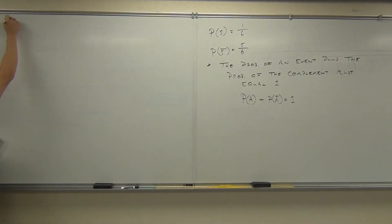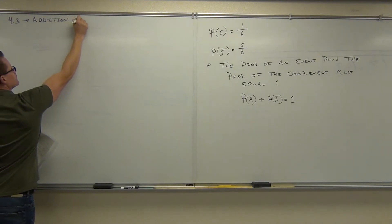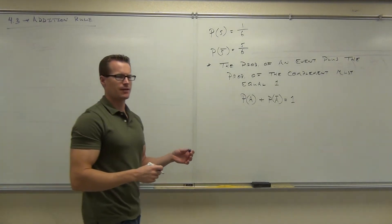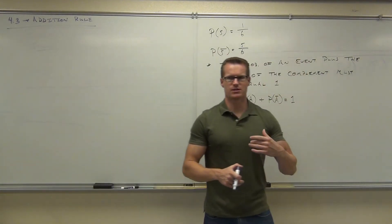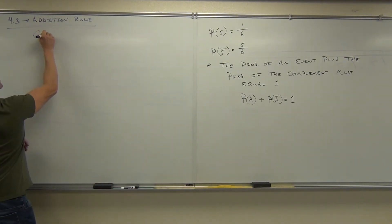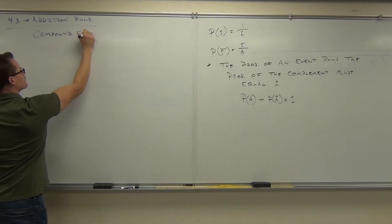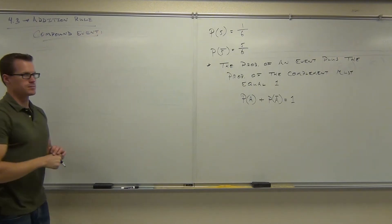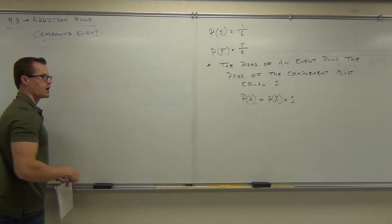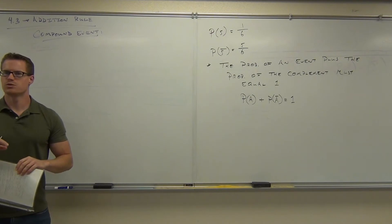So let's do 4.3. Before we get started in anything else, I need to tell you what something is going to be called. When you have two or more simple events that you want to occur, what that's called is a compound event. A compound event is when you're looking to find the probability of two or more simple events.